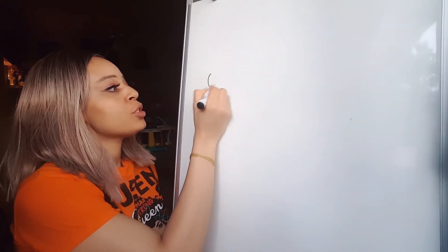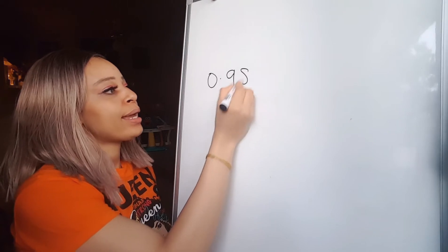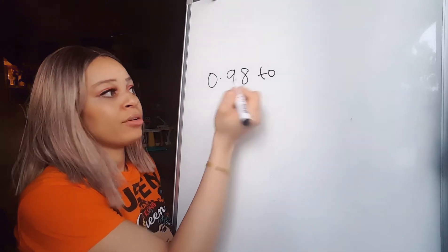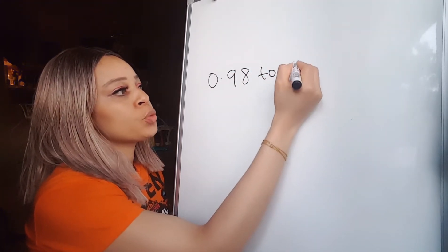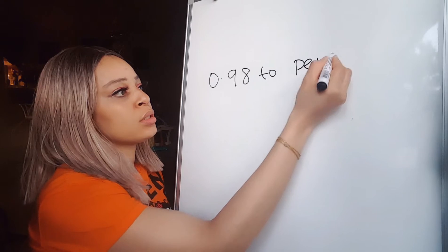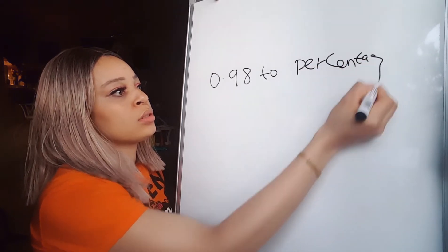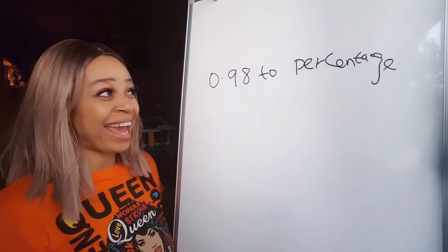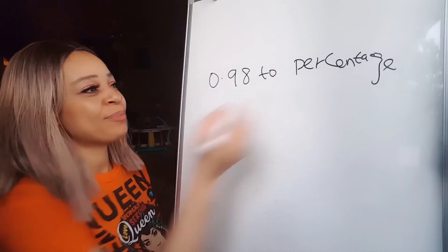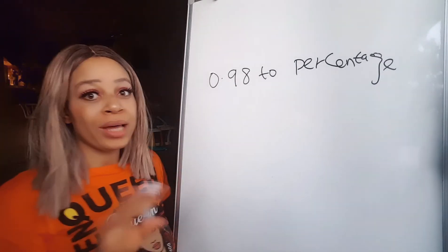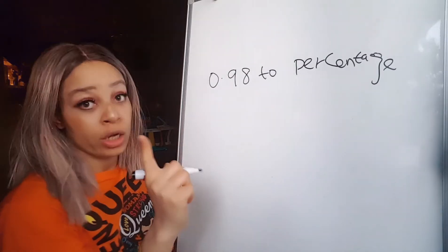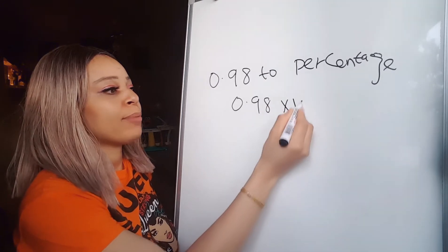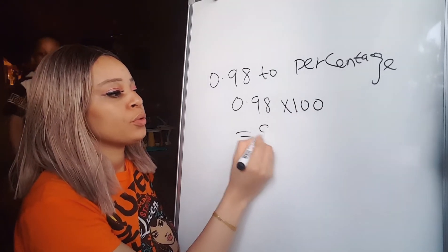Okay, for example you might be given a question like: solve 0.98. This is a decimal, right? It's a decimal. Yeah, you change it to percentage. Oh my gosh, I have a very bad handwriting, okay. Okay, okay, I'm getting somewhere. Yeah, change it to percentage. So all you gotta do is you multiply this with 100. Yeah, 0.98 multiplied by 100, it will give you 98 percent.